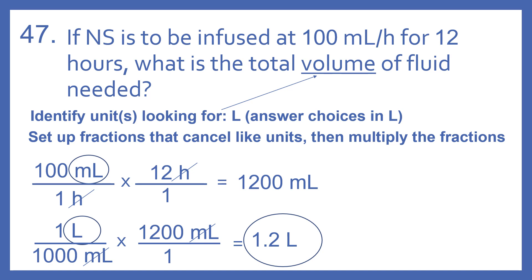So now we need to convert that to liters because our answer choices are in liters. So there's 1 liter per 1,000 milliliters times 1,200 milliliters. Liters is left on the top. We have a milliliter on the top, milliliter on the bottom, so those cancel. 1,200 divided by 1,000 equals 1.2 liters.